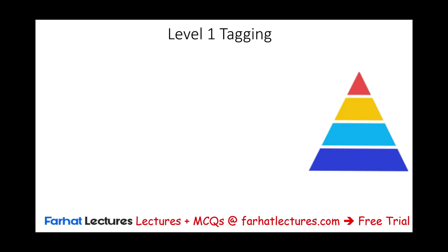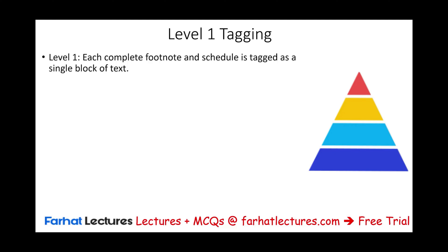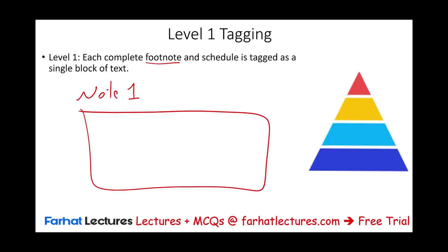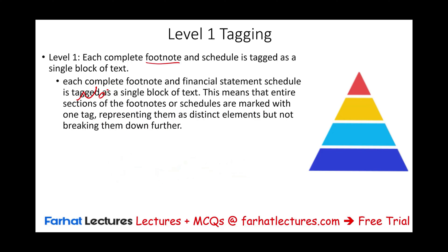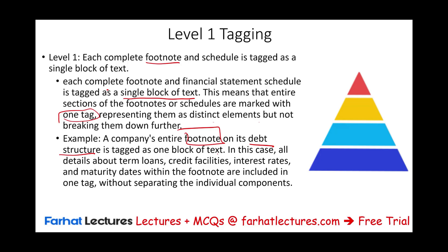Now let's dive further into XBRL. There are four levels of tagging — you tag the data so you can translate it and call it 'revenue' through that tag. Level one: each complete footnote and schedule is tagged as a single block of text. The entire section of a footnote or schedule is marked with one tag. For example, an entire footnote on debt restructuring is tagged as one block — all details about term loans, credit facilities, interest rates, and maturity dates are included in that one tag without separating individual components.